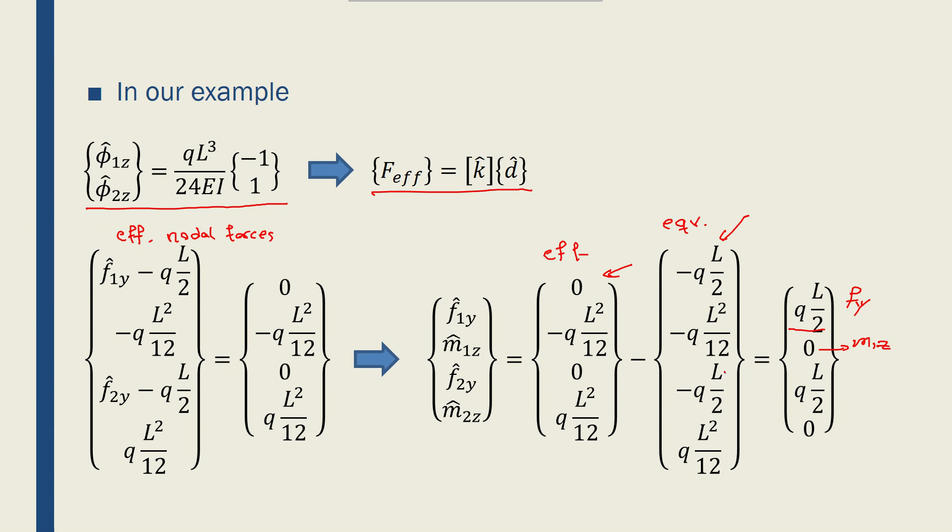0 minus minus QL over 2 gives me QL over 2, which is f2z, or f2y. And QL squared over 12 minus QL squared over 12 gives me 0, as I was expecting.